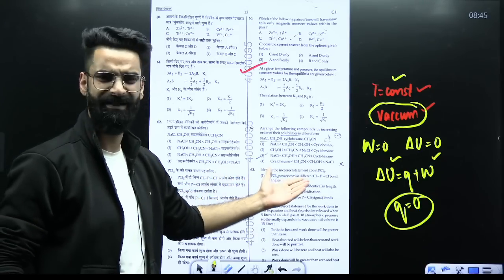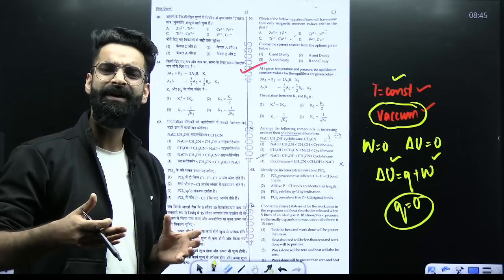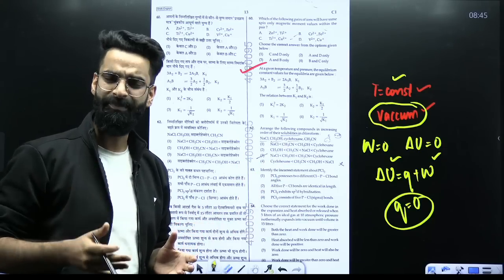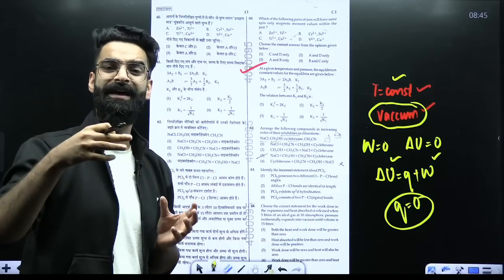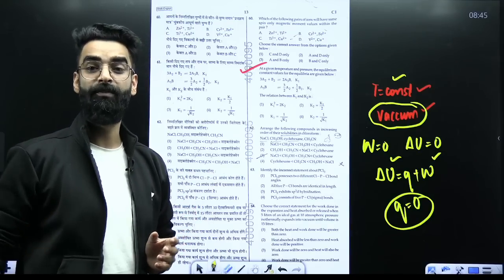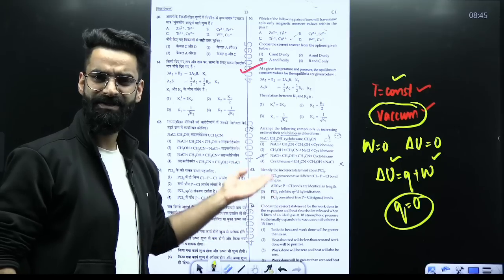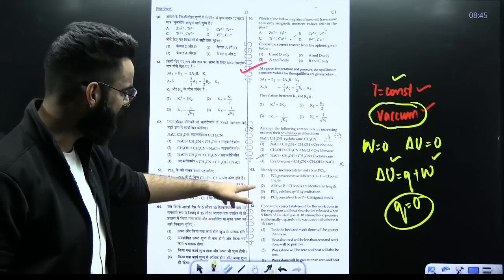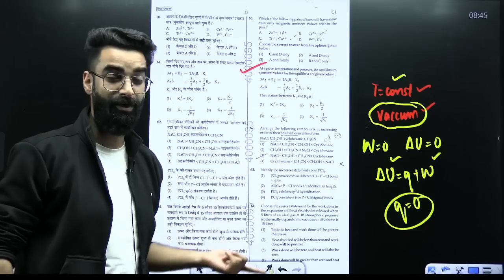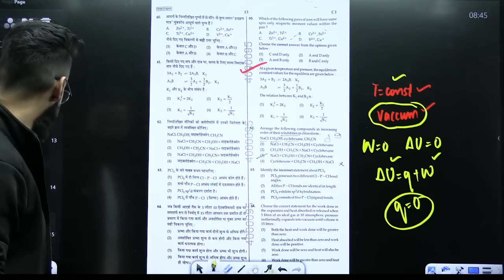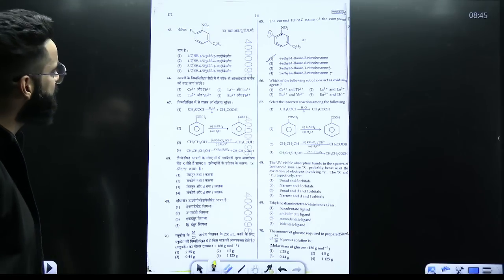Similarly, if you talk about PCl5, you know in case of PCl5 the geometry is trigonal bipyramidal and you know axial bond lengths, they are more than that of the equatorial bond lengths, I hope you know that. That is the question which is basically given to us. They are mentioning all the 5 P-Cl bonds are identical in length, which is not the case in case of PCl5. Similarly, let's have a look on other questions.